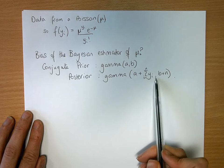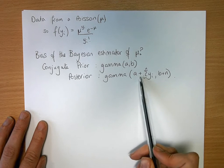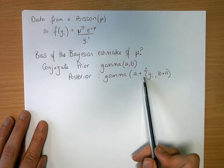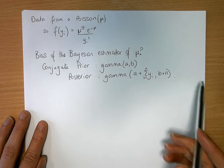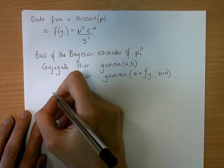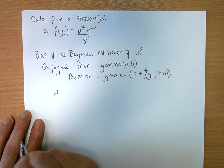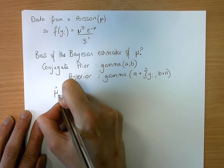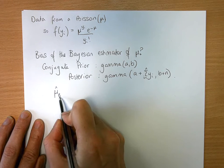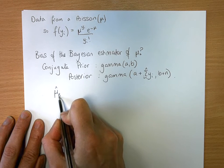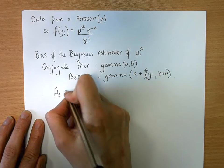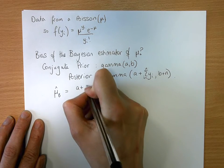So this distribution has a mean of a plus the sum of yi divided by b plus n. So we have the best guess at this mu. So we put it at the hat as being the best guess underscore b for Bayesian is a plus the sum of yi divided by b plus n.